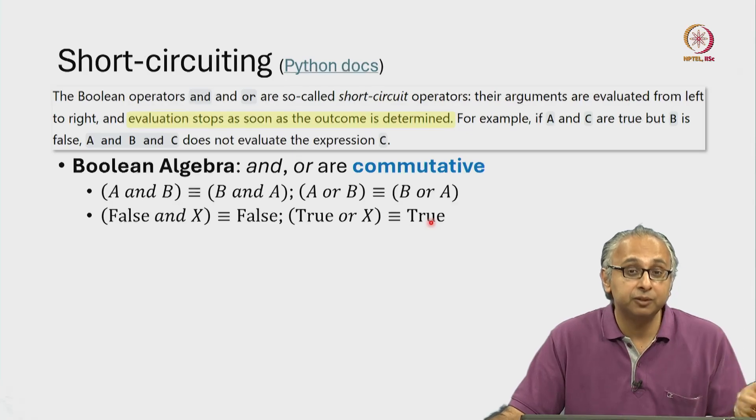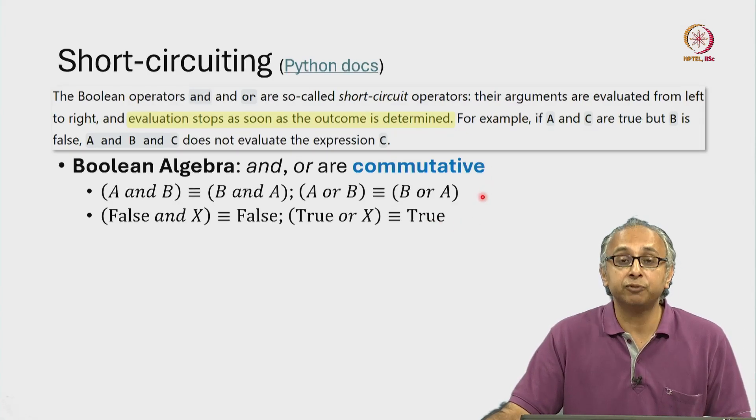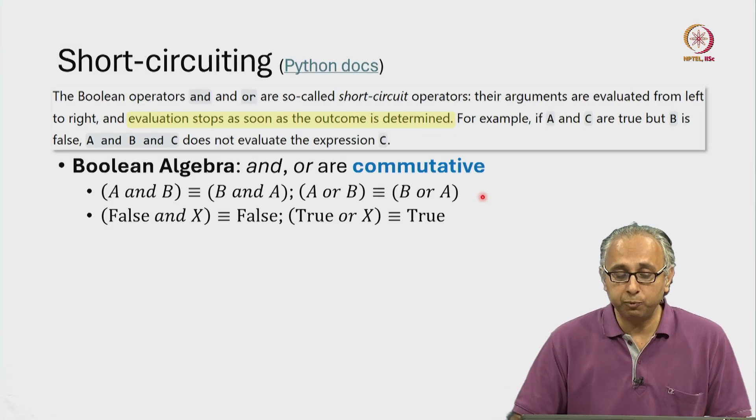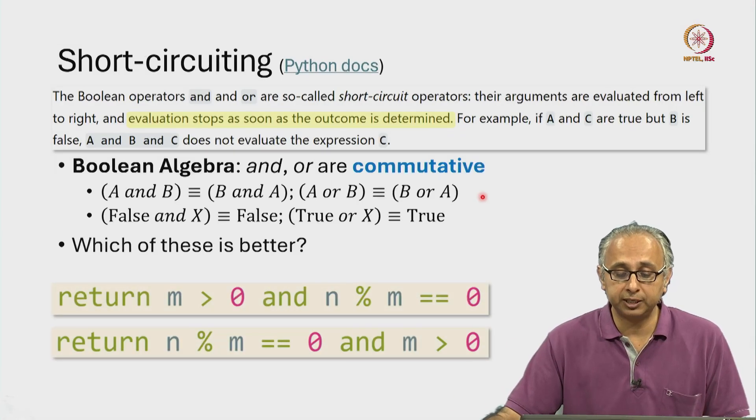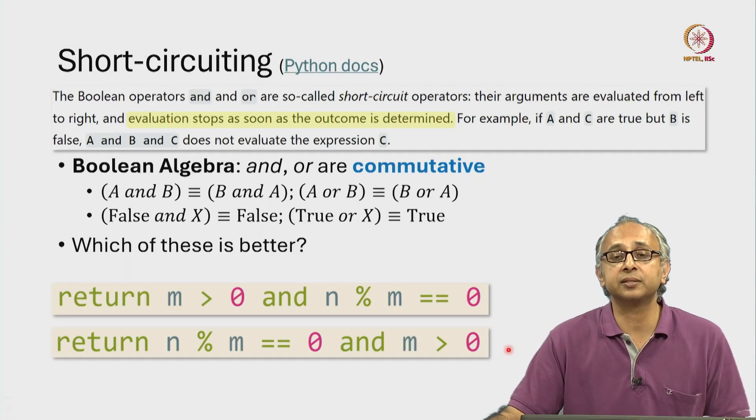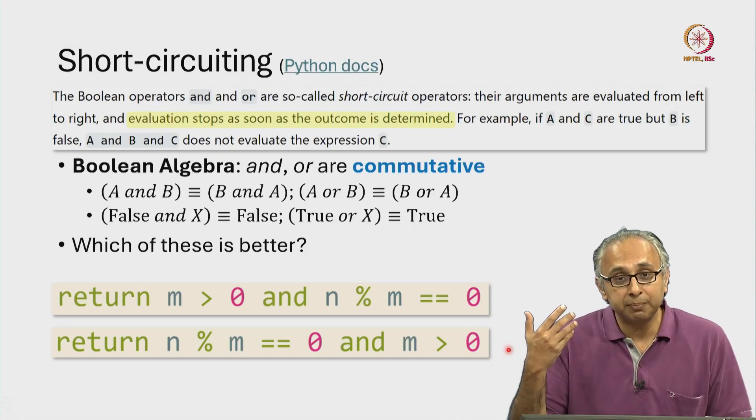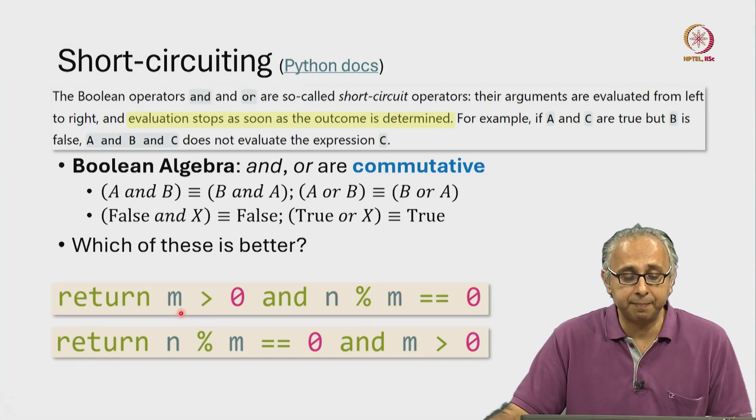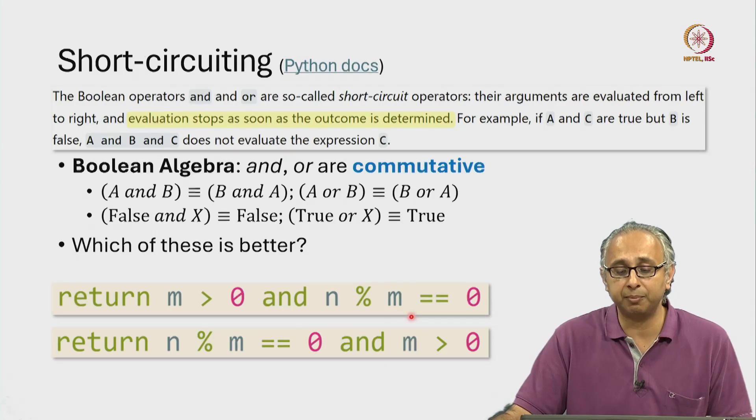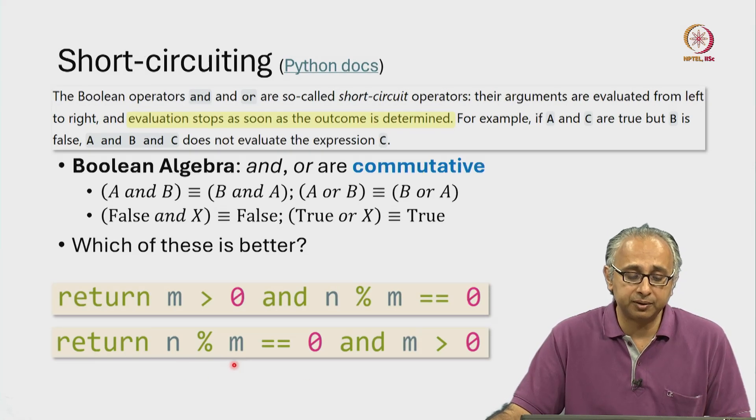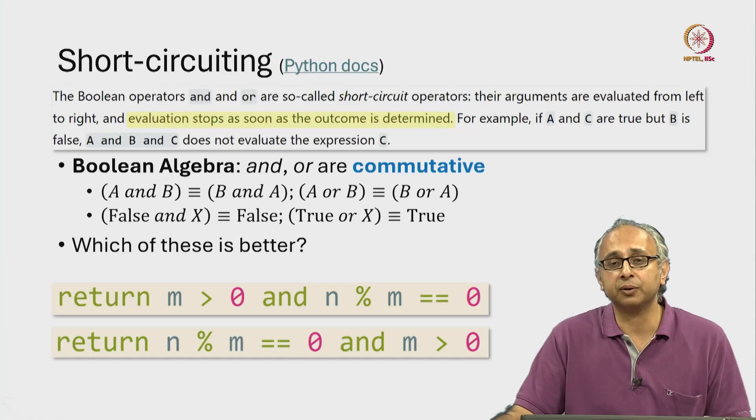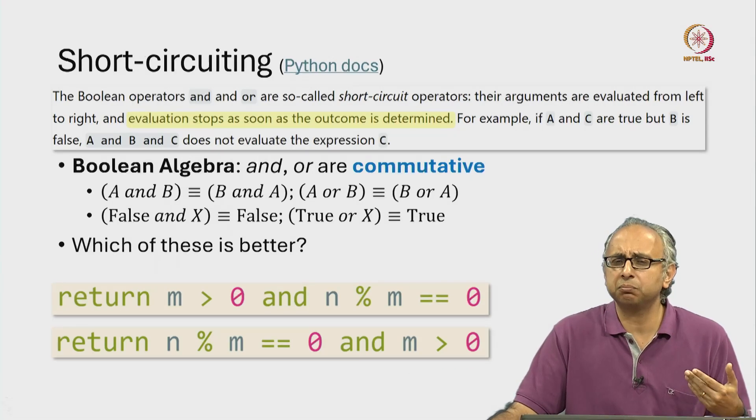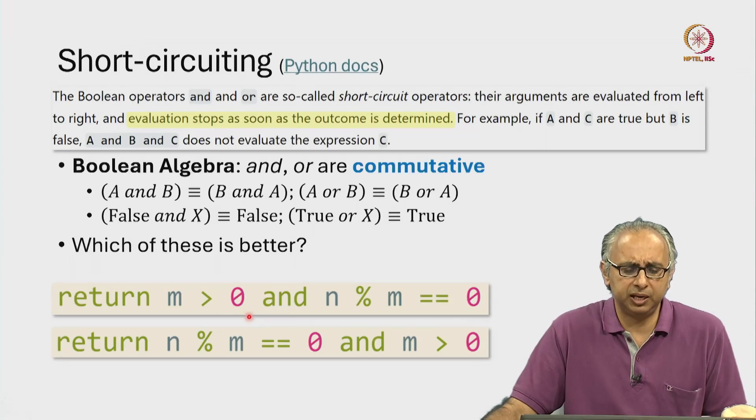And this can be confusing because many of us know these familiar rules of boolean algebra. And so when we look at code that is written like this or like this, we might actually believe that they are the same. Here I am returning M greater than 0 and N remainder M is 0. And here I am returning N remainder M is 0 and M is greater than 0. And someone reading this will say, what's the difference?